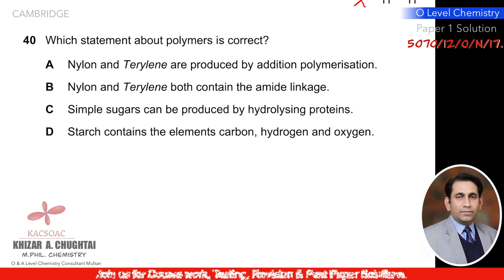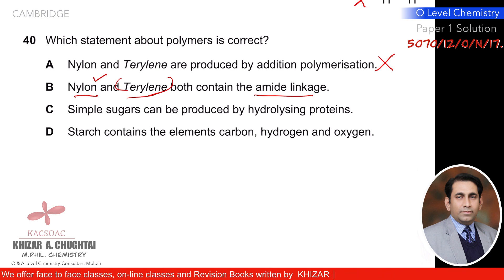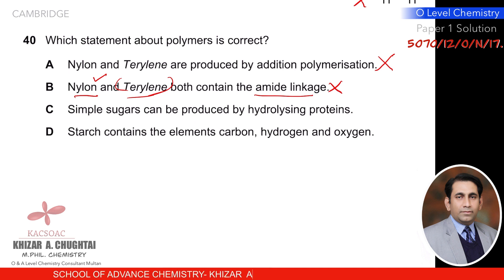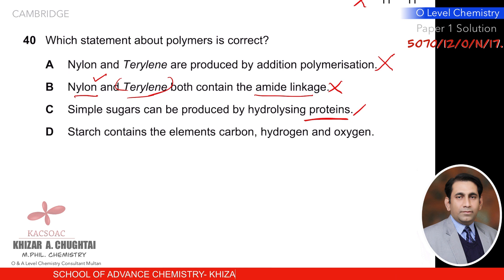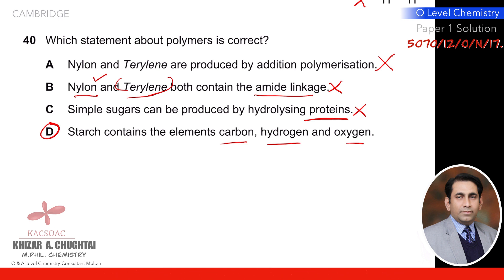Question forty: which statement about polymers is correct? Nylon and terylene are produced by addition polymerization — no, they are formed by condensation polymerization. Nylon and terylene both contain amide linkage — no, terylene contains ester linkage. Simple sugars can be produced by hydrolysis of proteins — no, hydrolysis of proteins gives amino acids. Starch contains the elements carbon, hydrogen, and oxygen — yes, this is true. So D is the correct option. That's all for today, thank you very much, have a nice day.